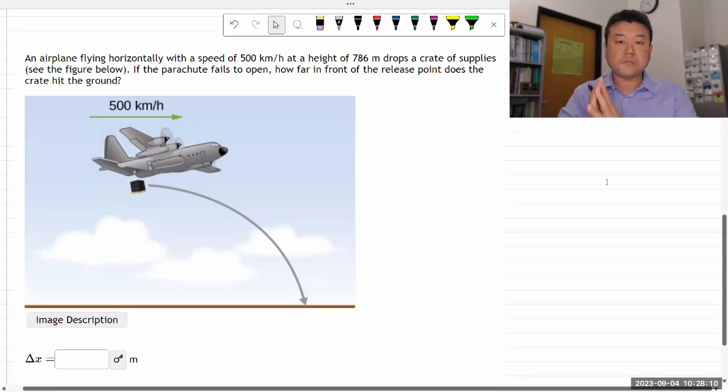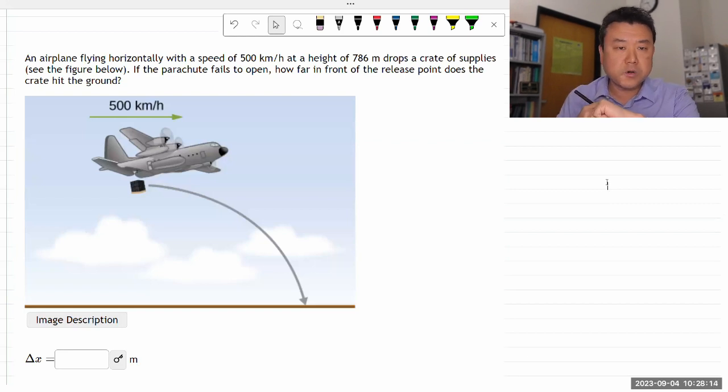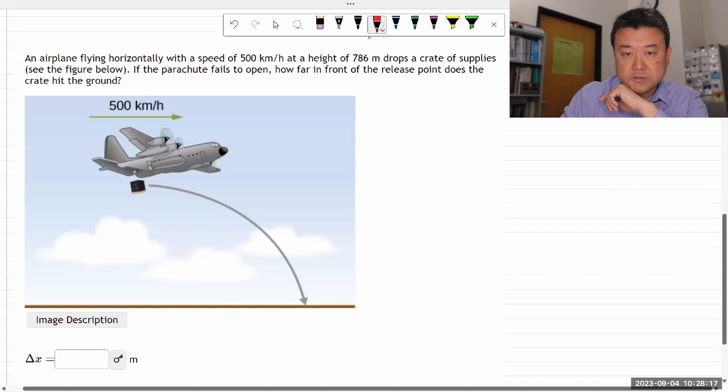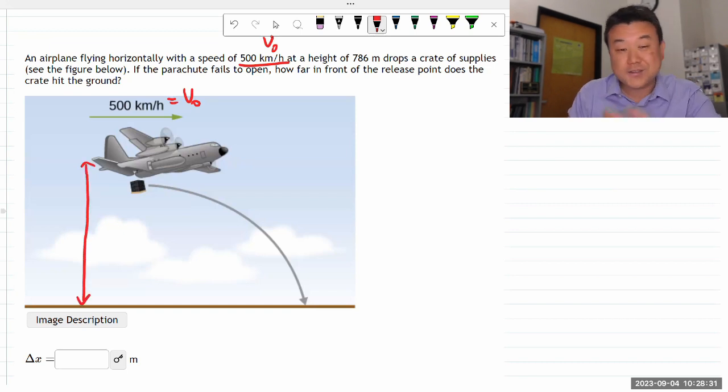This question says an airplane flying horizontally with some speed at a height of 786 meters. Let me start marking V-naught. Actually, I guess I can mark it this way. Normally I would sketch out the situation, but I have a figure so let me use that. It's flying at some height, drops a crate of supplies. If the parachute fails to open, how far in front of the release does the crate hit the ground?